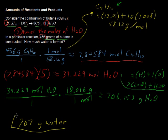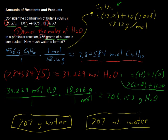And because of the density of water, one gram of water is one milliliter of water, you can talk about this in terms of volume as well. 707 milliliters of water. Quite a bit, but quite a bit of butane was burned. And by the way, again, remember, we're not creating something out of nothing.